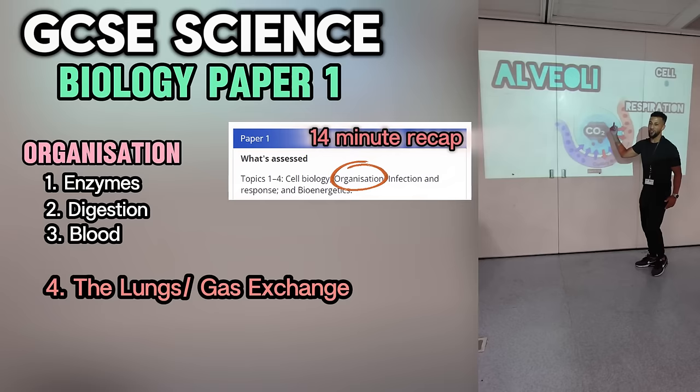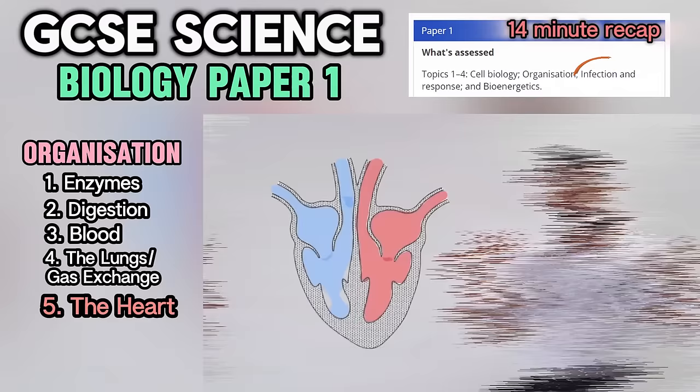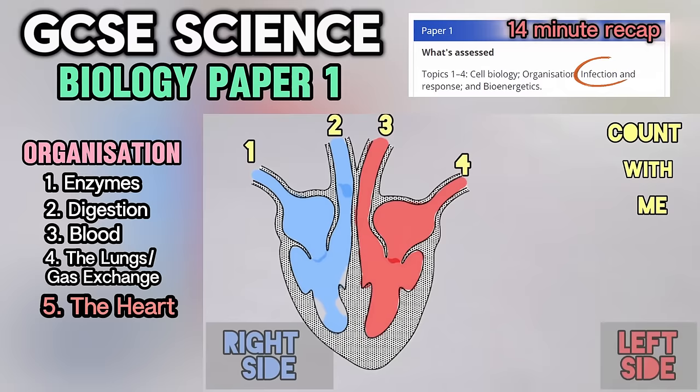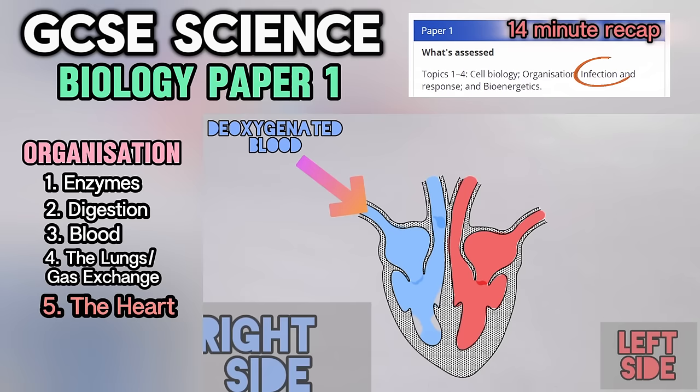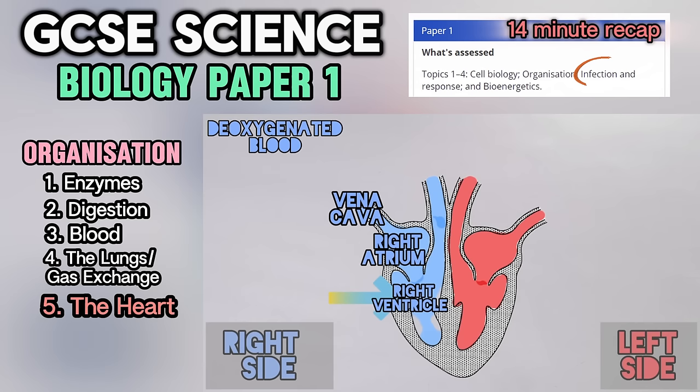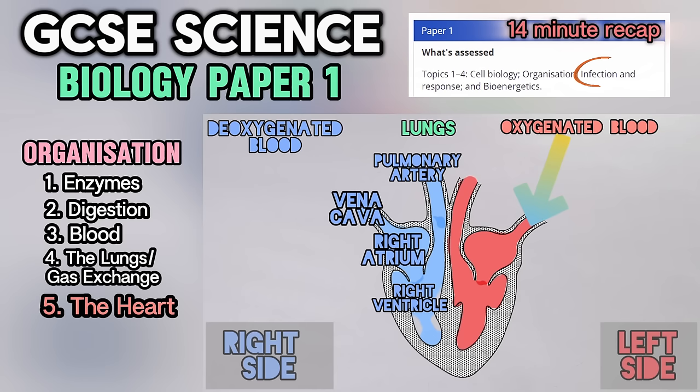The heart has 4 chambers: 2 atria and 2 ventricles. The left side is bigger and the right side is smaller. Blood without O2 enters the right atrium through the vena cava, goes to the right ventricle, then out the pulmonary artery to the lungs. It picks up O2, then returns through the pulmonary vein to the left side, which pumps it out through the aorta to the body.